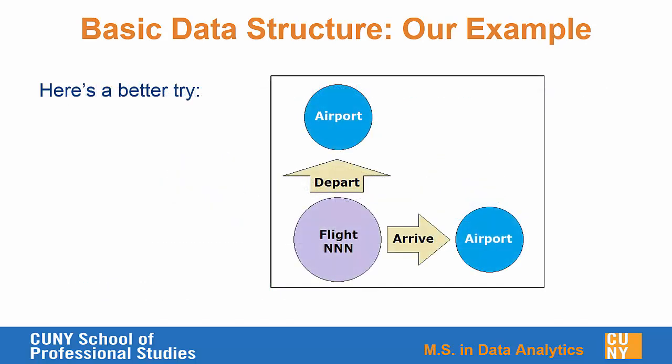Here's a better try. We'll have a node for each airport, but we'll also have a node for each flight. We'll use relationships between the flight and its departure airport and its arrival airport, so we'll be able to query for different flights, which airports they're going to, which airports they're coming from, or which flights are coming into or out of a particular airport. We can then assign properties to each of these objects — for the airport, properties like city and state or number of gates; for each flight, properties such as airline and capacity.